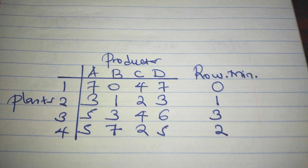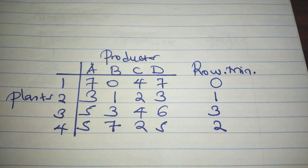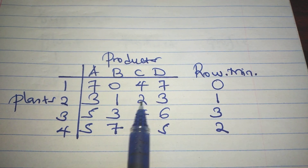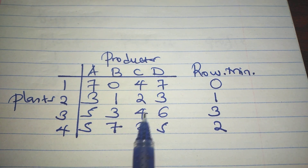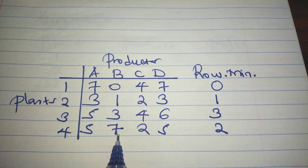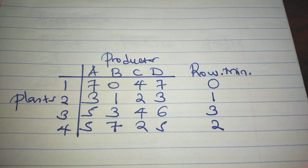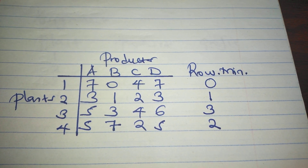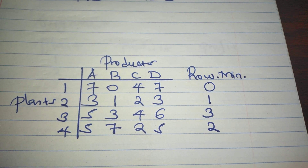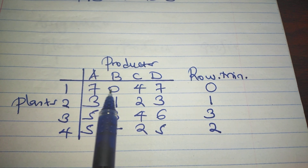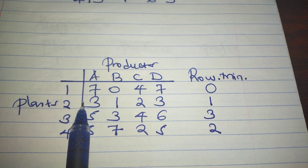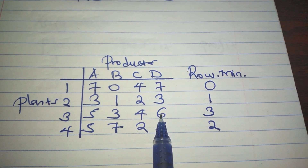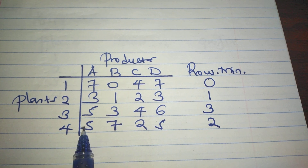That operation gives us a table which looks like this: row one: 7, 0, 4, 7; row two: 3, 1, 2, 3; row three: 5, 3, 4, 6; row four: 5, 7, 2, 5. The next step is to reduce each row by its smallest element. In row one the smallest element is zero; in row two it is one; in row three it is three; in row four it is two.